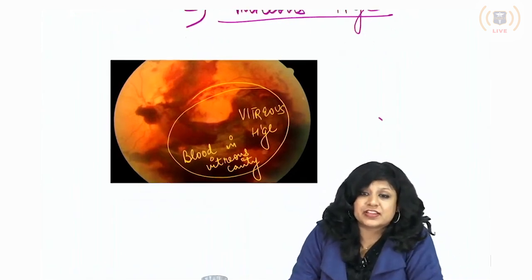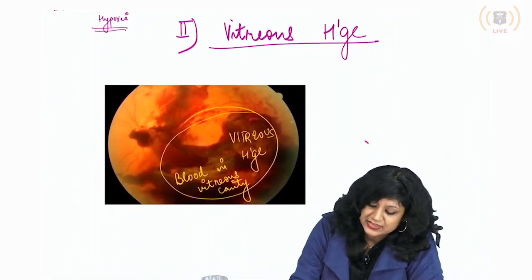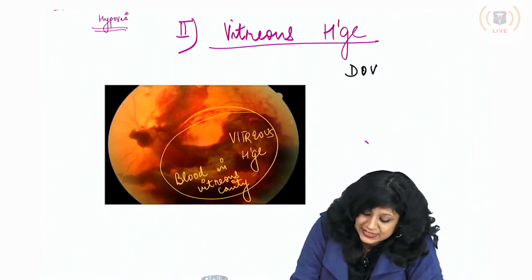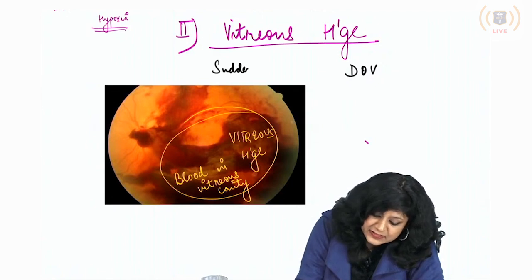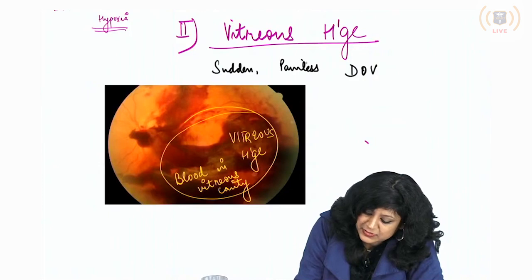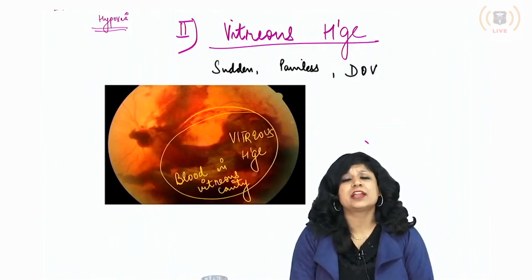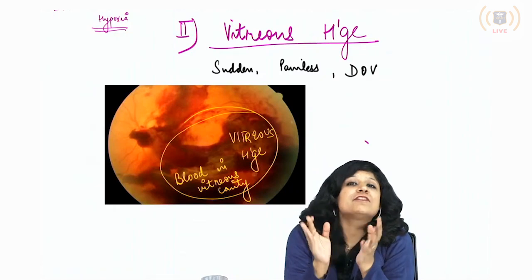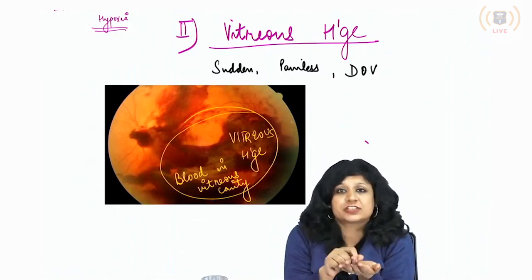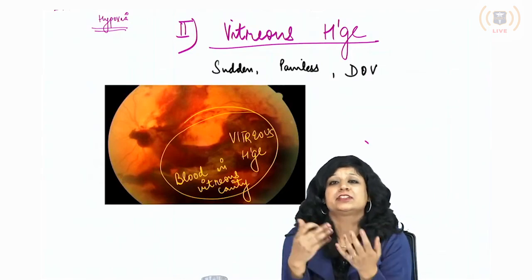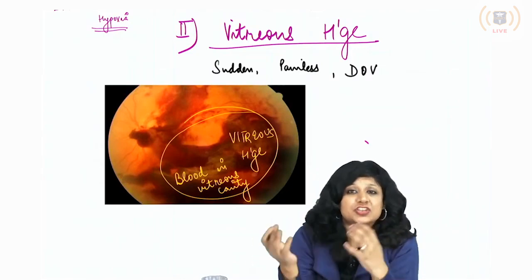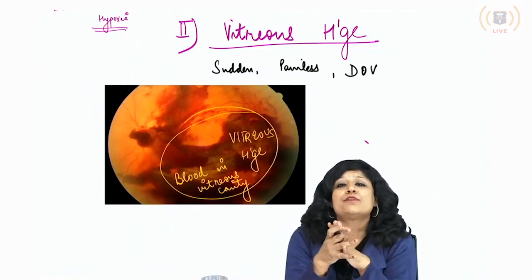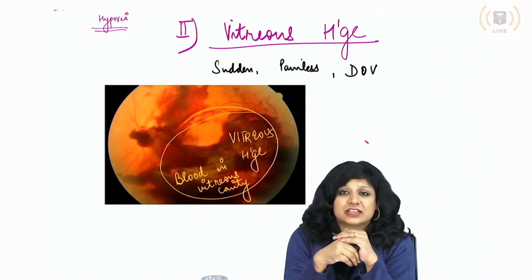When you have blood in the vitreous cavity, the patient presents with sudden painless diminution of vision. Every clinical question gives you a clue about what kind of vision loss it is — whether it is sudden or gradual, progressive or stationary, painful or painless — and that gives you a lot of clues about the pathology the patient is having.